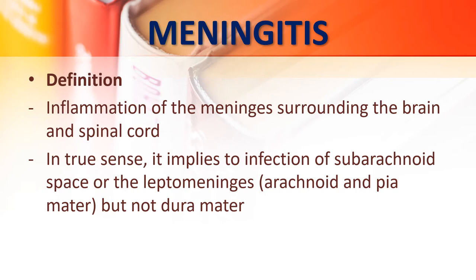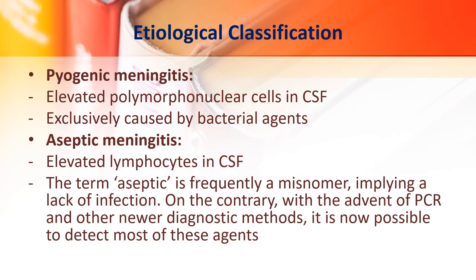Meningitis, as the name suggests, is inflammation of the meninges surrounding the brain and the spinal cord. In the true sense, it implies infection of the subarachnoid space or the leptomeninges — the arachnoid and pia mater — not the dura mater. It is customary to classify meningitis according to the etiology, so it is also known as etiological classification.